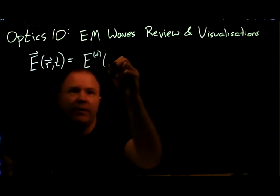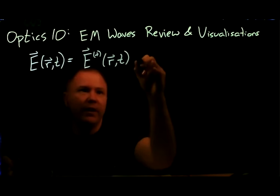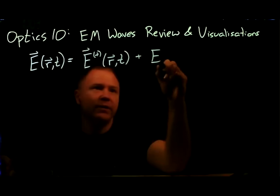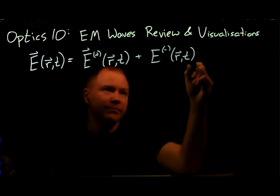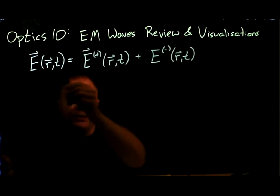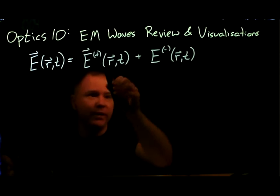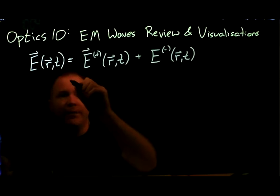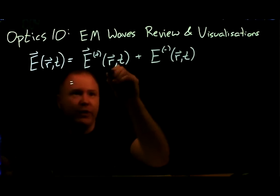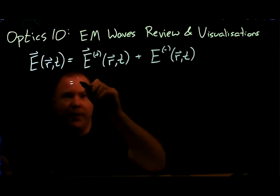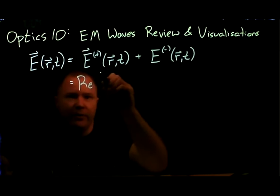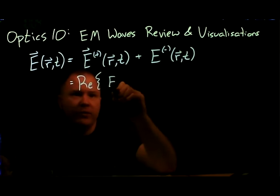So this is E-plus of r and t, and E-minus of r and t. If this field is going to be real, these each need to be complex conjugates of each other. You can write this as this field plus its complex conjugate, which equals two times the real part of that number.